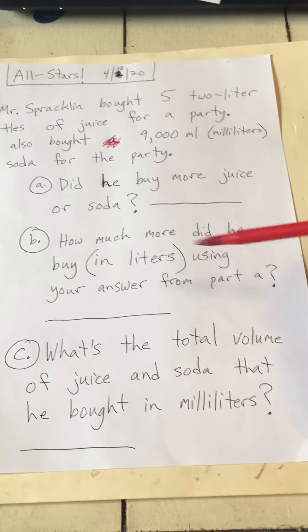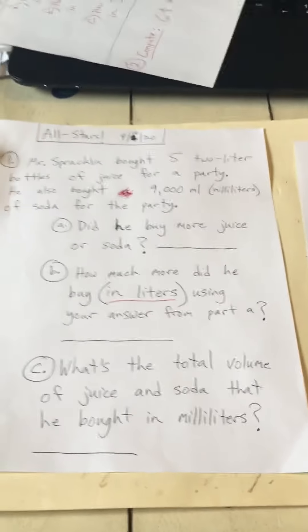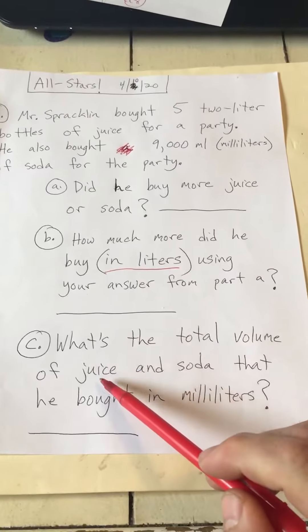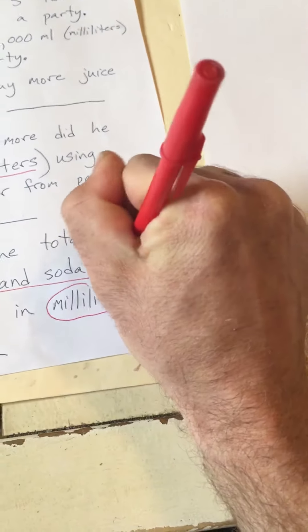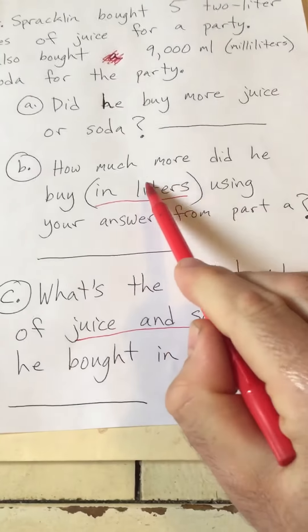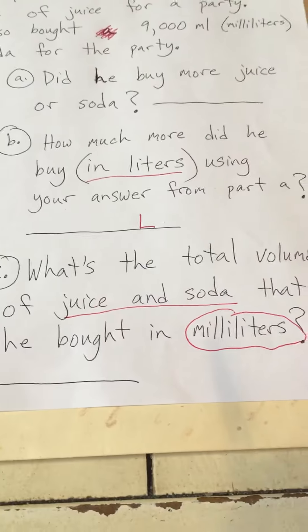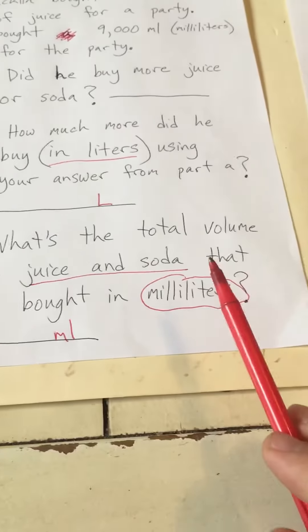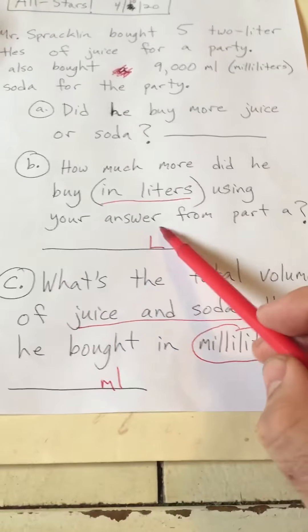Part B: how much more did he buy in liters, using your answer from part A — so we need that answer to help us. Part C: what's the total volume of juice and soda he bought? This time it wants the answer in milliliters. So I'm going to put an 'L' next to part B now to make sure my answer is in liters and not milliliters, and 'ml' next to part C — that's a way to set yourself up for success.